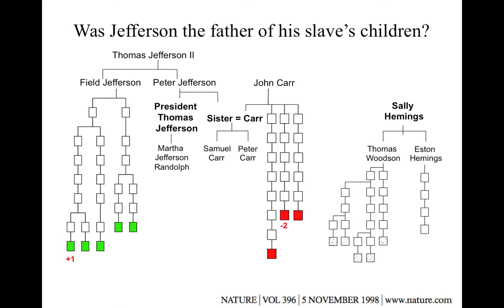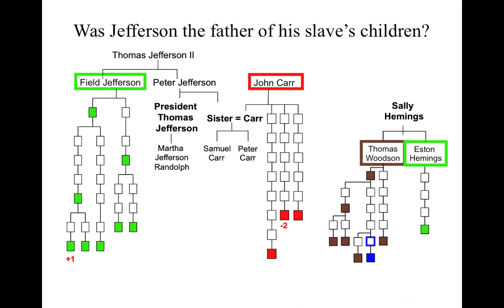On the Woodson side, the results showed no connection with the Jefferson DNA and no connection with the Carr DNA, ruling out Thomas Jefferson and his nephews as potential fathers for Thomas Woodson. However, when the results came back for Eston Hemings, the Y-DNA of his direct male-line living descendant was an exact match for the Jefferson DNA, indicating it was highly probable that Thomas Jefferson was the father of Eston Hemings.